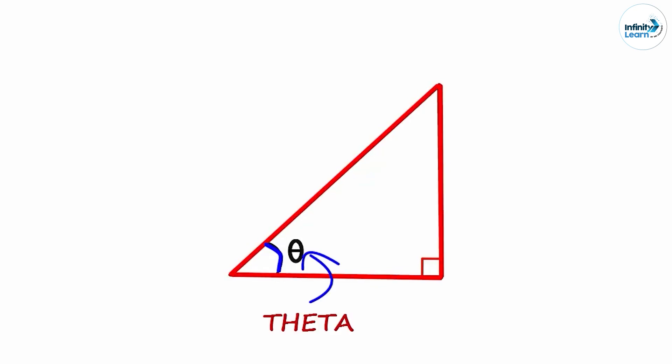This is the triangle we will be dealing with to cover most of our Trigonometry. A triangle with an angle theta and a right angle. It doesn't have to be called theta, but that's what it is generally referred to as.